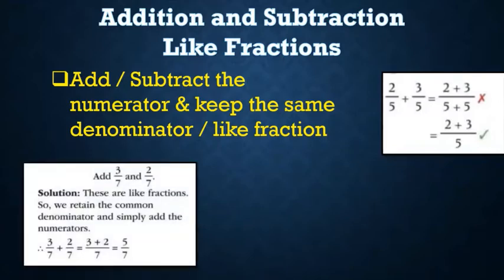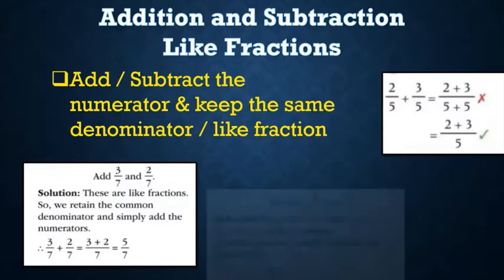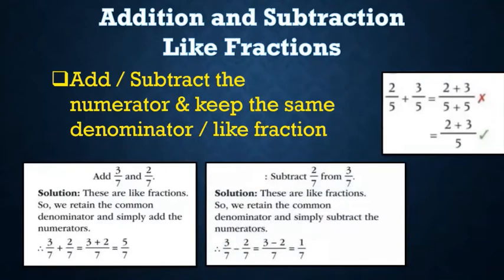For example, if you want to add 3/7 and 2/7, we just add them: 3/7 + 2/7 = (3+2)/7 = 5/7. And if we want to subtract, 3/7 - 2/7 = (3-2)/7 = 1/7.